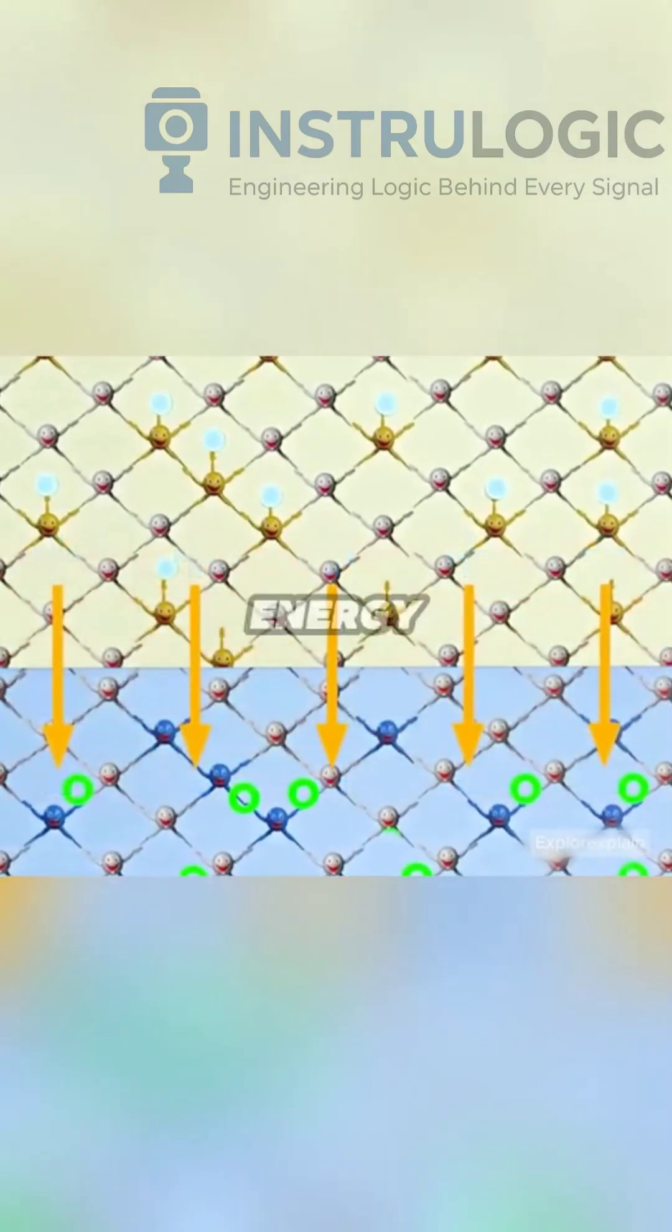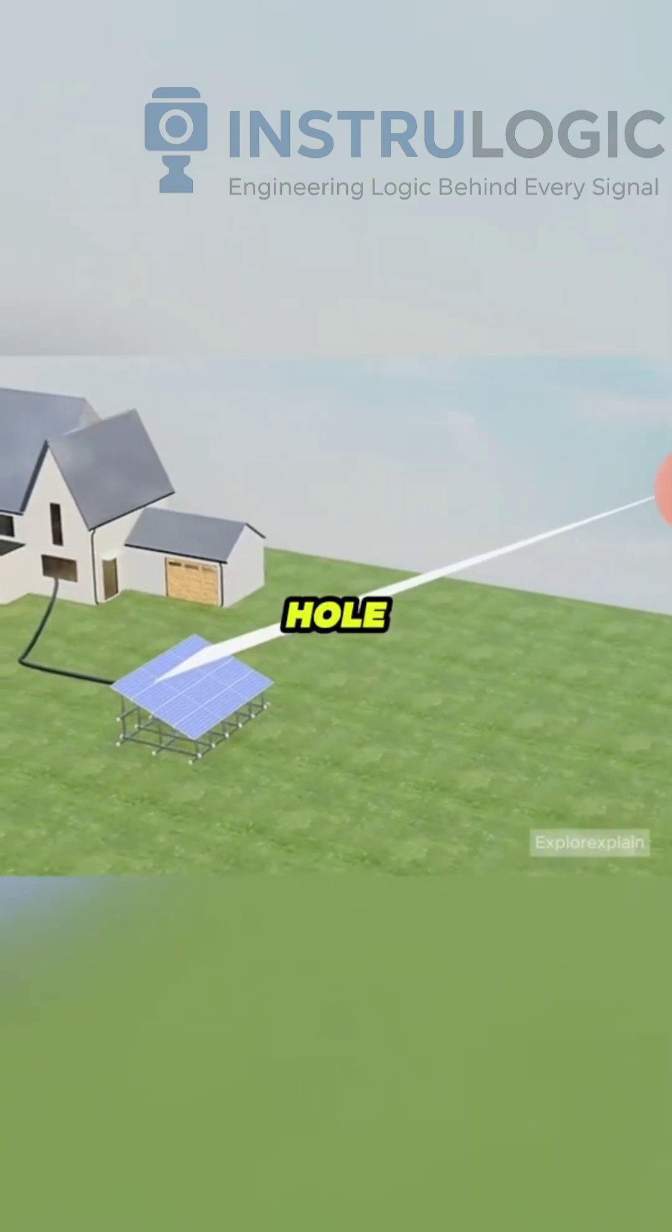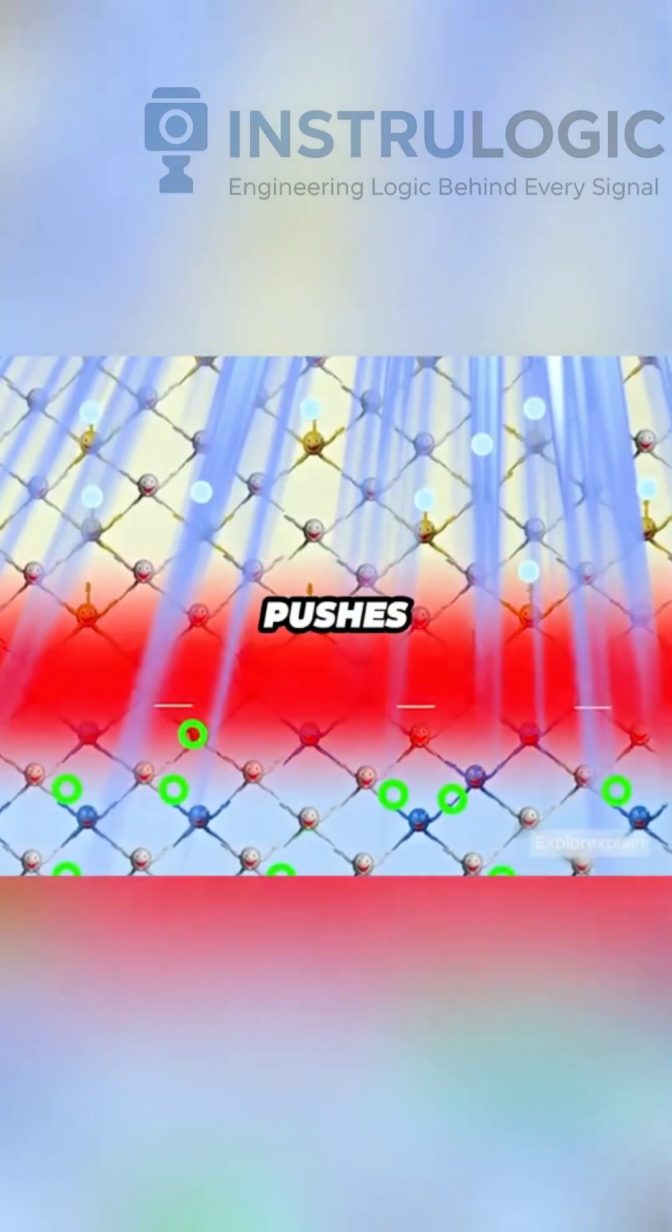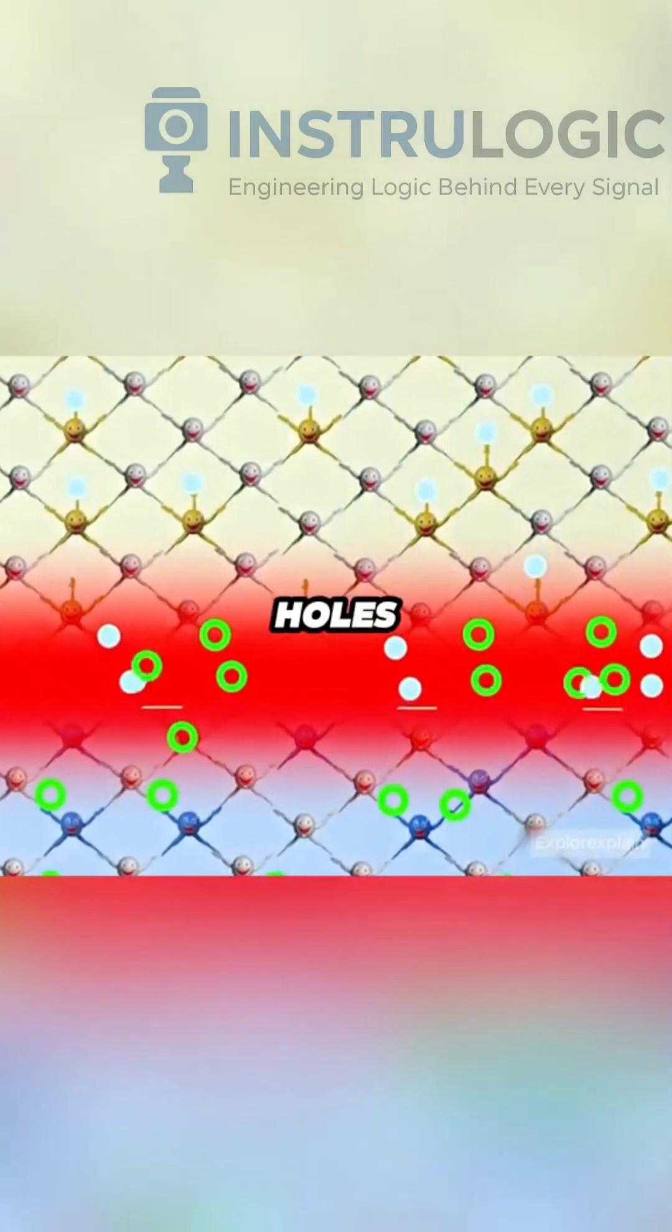When sunlight hits, its energy creates new electron-hole pairs. The electric field pushes electrons to the n-type and holes to the p-type.